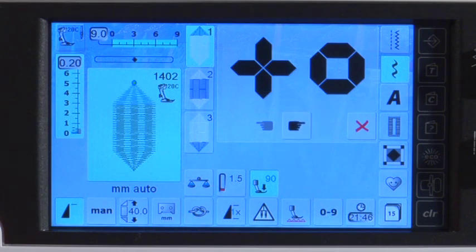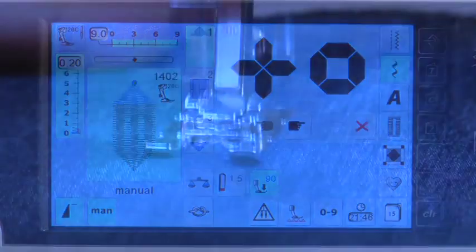Continue sewing. With manual tapering, you determine the length. To do this, touch the manual icon. Begin sewing.